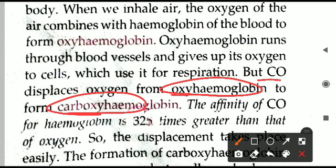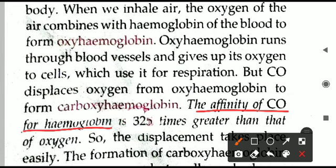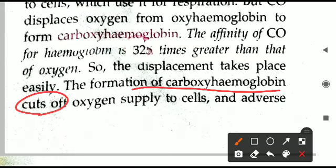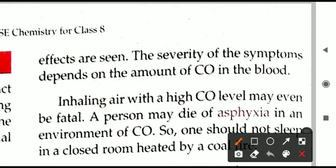If you are breathing polluted air, instead of oxyhemoglobin, carboxyhemoglobin will deposit in the blood. This is because the affinity of carbon monoxide for hemoglobin is 325 times greater than that of oxygen. Hemoglobin is highly attracted toward carbon monoxide. So if both CO and O₂ are available, carbon monoxide will get readily absorbed into the blood, cutting off oxygen supply to cells, leading to adverse effects and even death due to asphyxia — lack of oxygen.